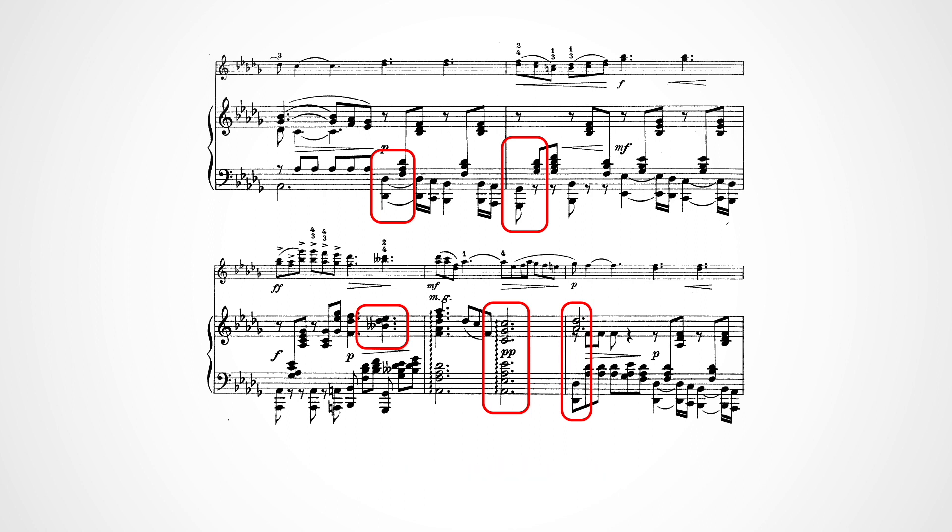Now in the next bar, a whole chord is circled, and there's a squiggly line in front of it. What is that line? It means roll the notes in this chord, meaning play them one at a time quickly, starting usually from the bottom.